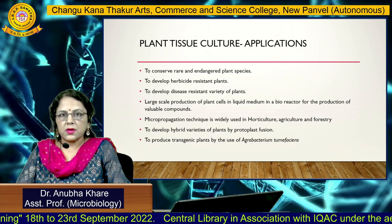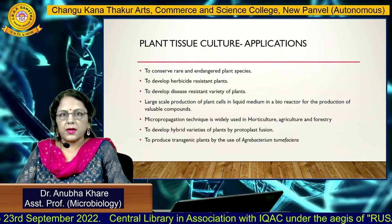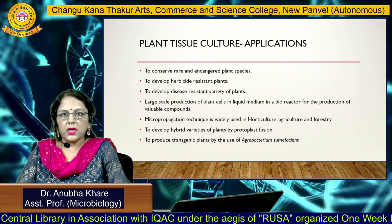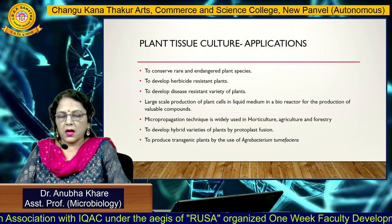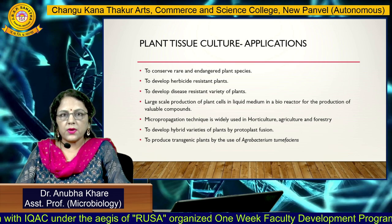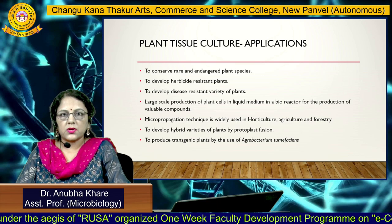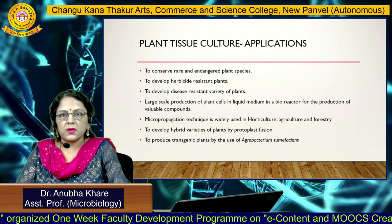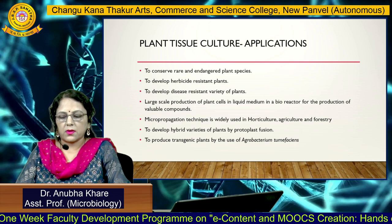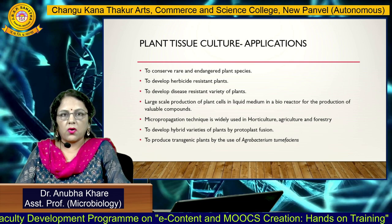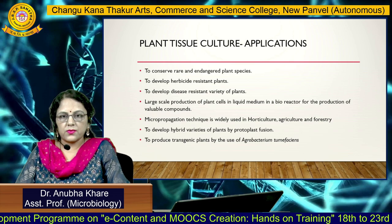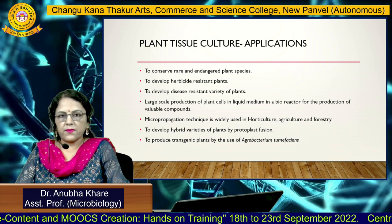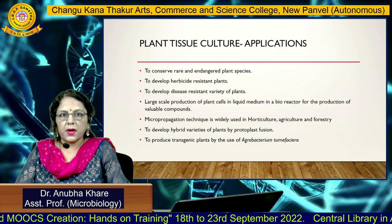Plant tissue culture experiments enable production of rare and endangered plant species, herbicide-resistant and disease-resistant varieties, and large-scale production of plants in liquid or suspension medium for valuable compounds like perfumes, tannins, phenols, and phenolics. Micropropagation is widely used in horticulture, agriculture, and forestry. Hybrid varieties can be produced by protoplast fusion and transgenic plants by using Agrobacterium tumefaciens.